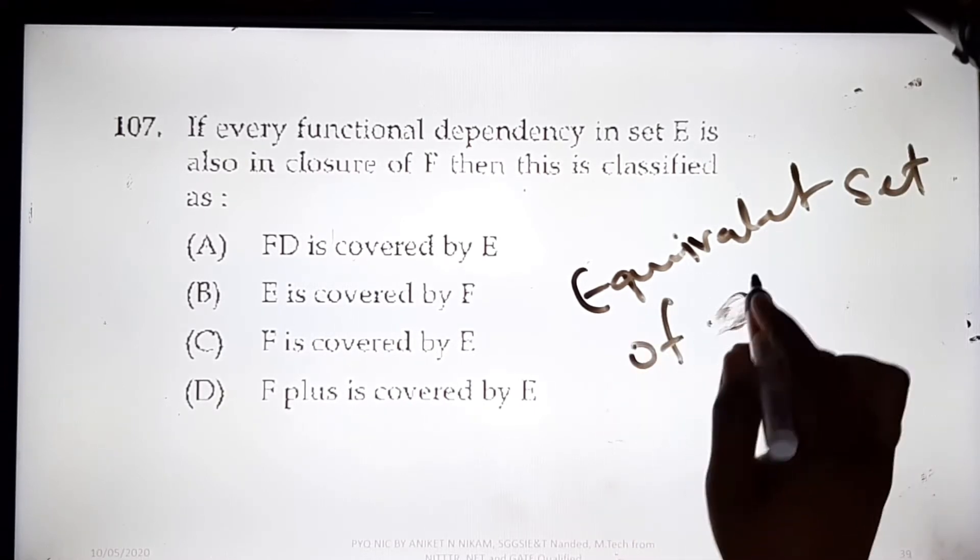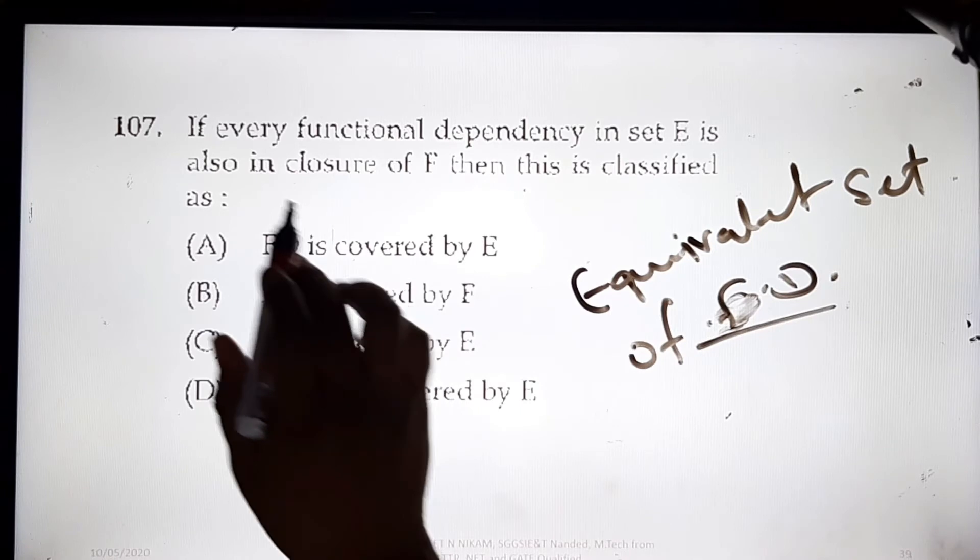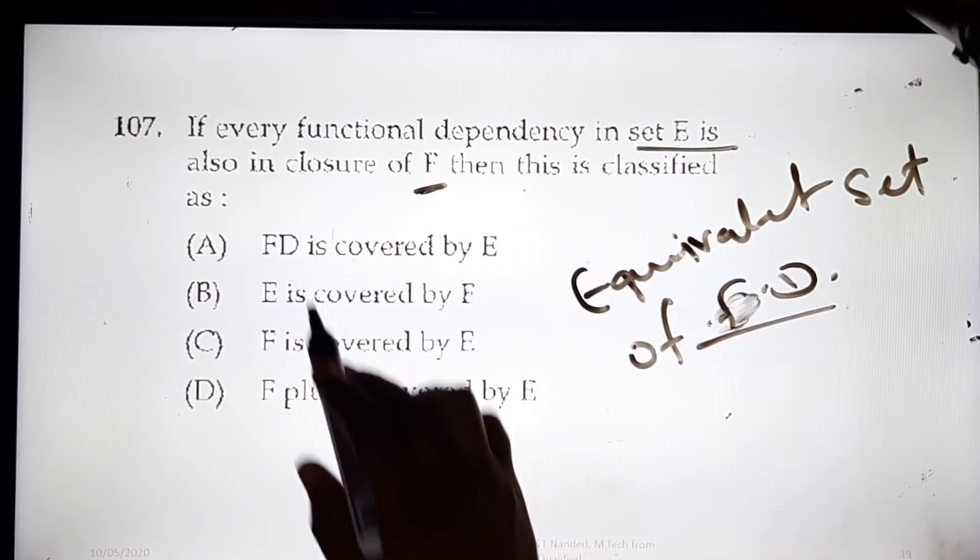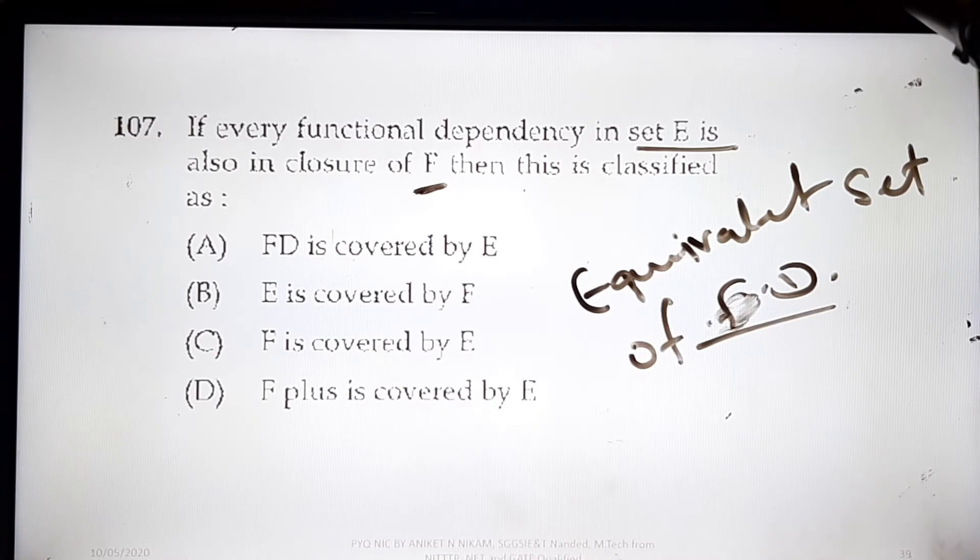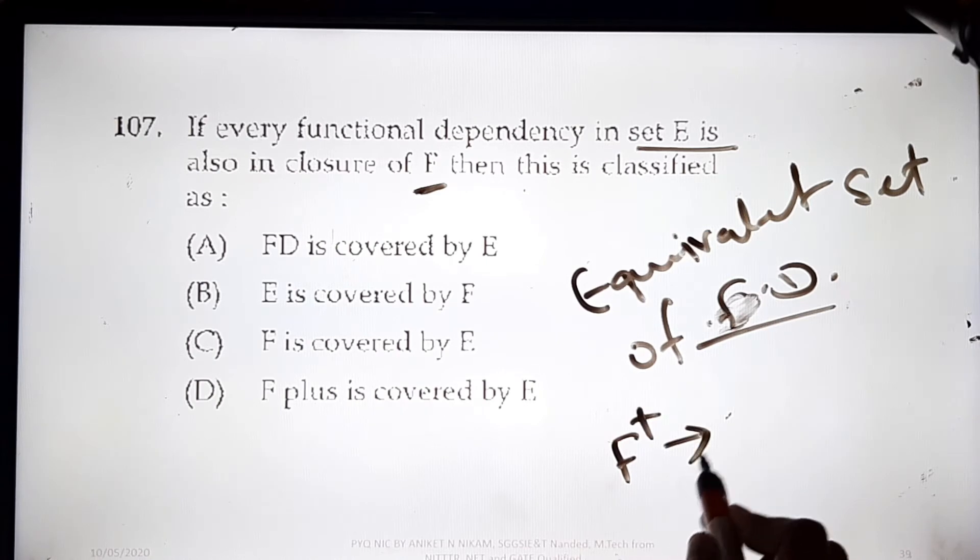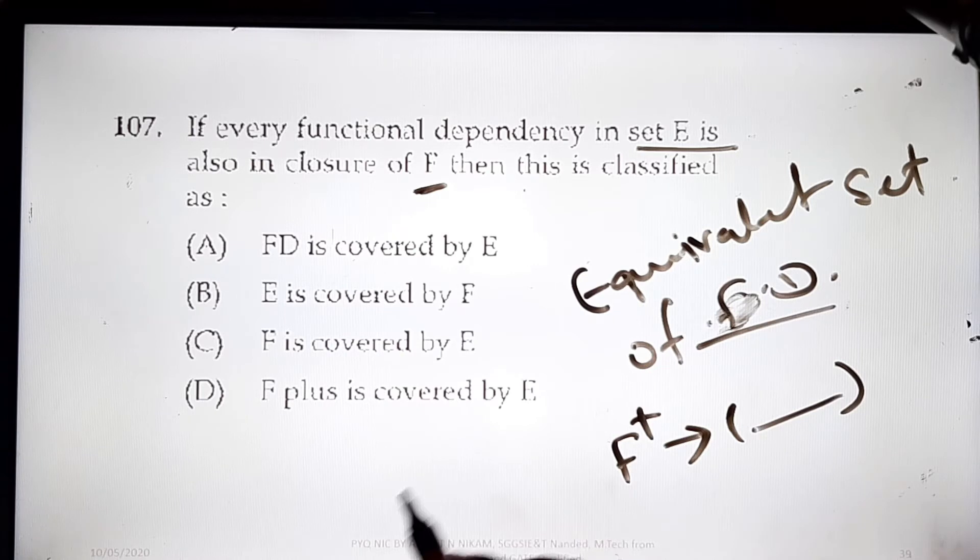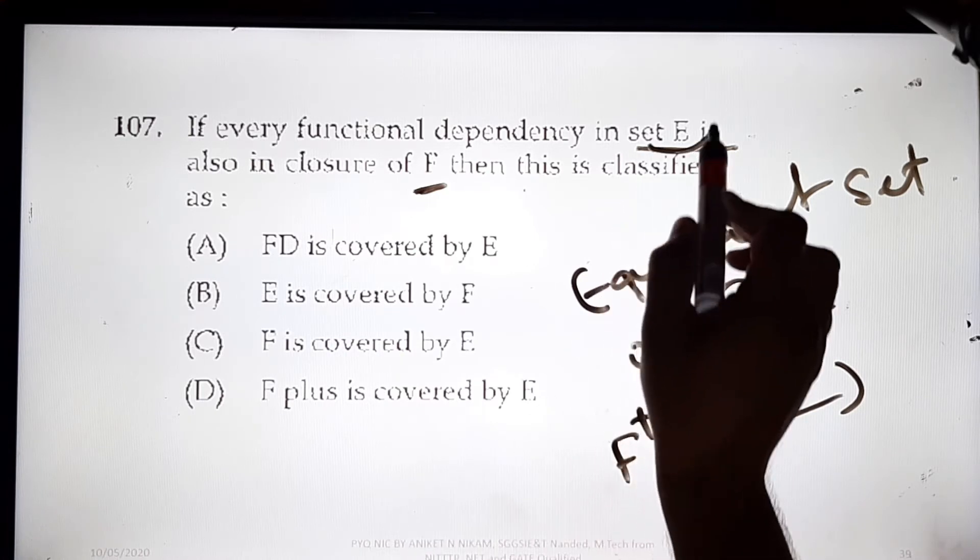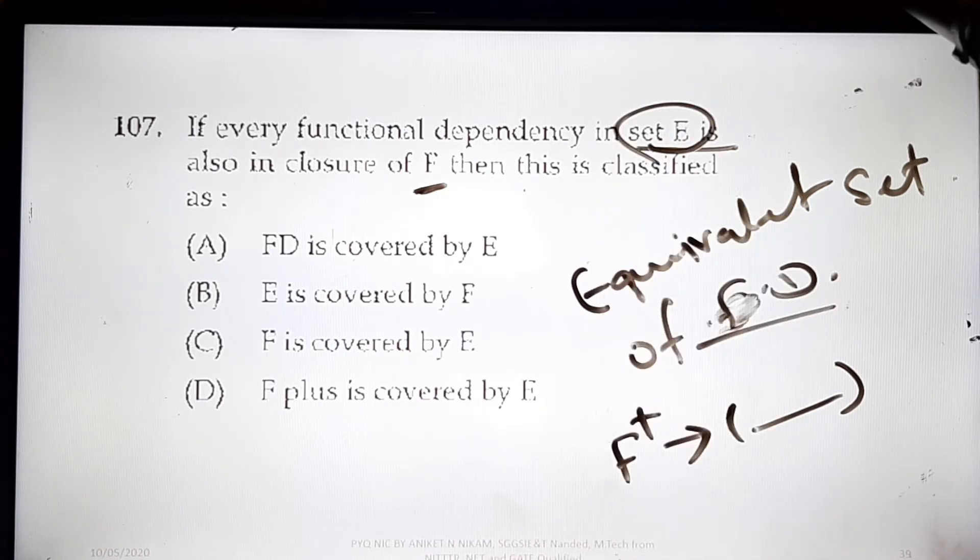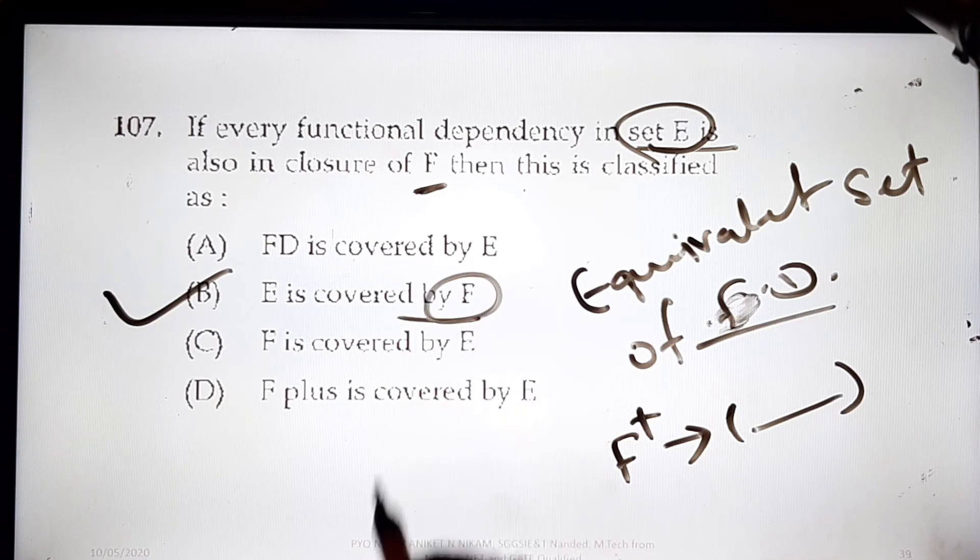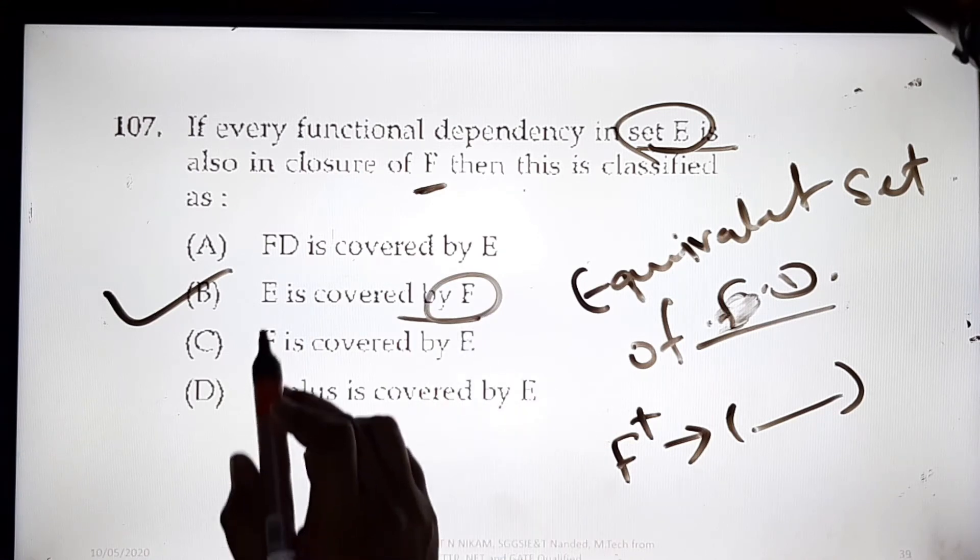I have discussed this. So if every functional dependency of set E is also in closure of F, so F closure - if F closure is determining all the attributes which are covered in the functional dependency set of E, then we can say E is covered by F. We are checking if F is covering E or not, so the answer is E is covered by F.